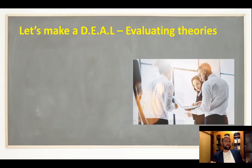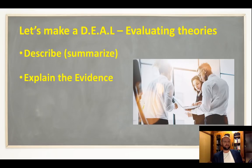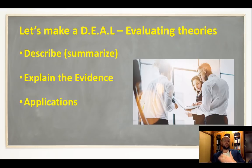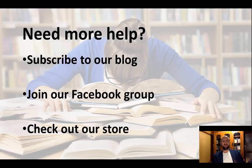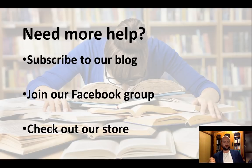To recap: evaluating theories using 'Let's Make a Deal' — description, evidence, applications, limitations. For IB Psychology students writing a short answer response, outlining schema theory in the detail discussed in this video plus one supporting study is all you need. For an essay, add a second study, applications, and limitations. Take your time with schema theory — it's a tricky one — relate it to concrete examples, subscribe to our blog, post questions to our Facebook group, and check out our store for more resources.